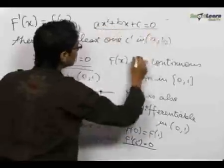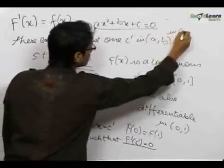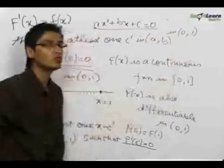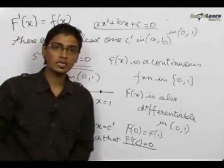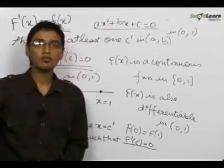Hence we have proved that ax square plus bx plus c is equal to 0 at least once in the interval 0 to 1. This condition involved a very important concept which was Rolle's concept, which would be very useful in the forthcoming chapters.